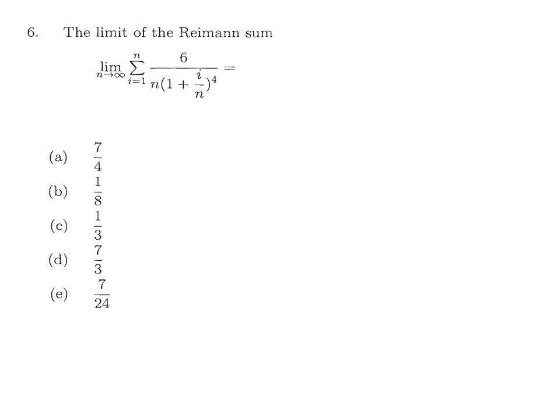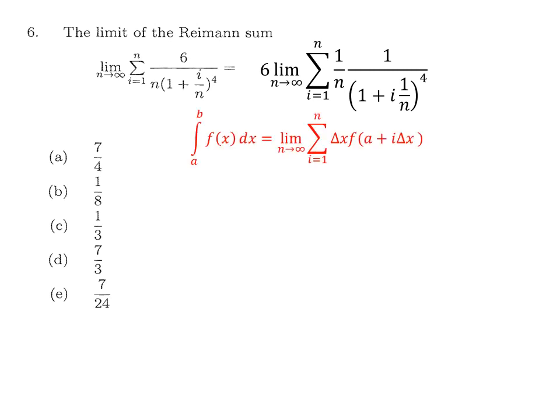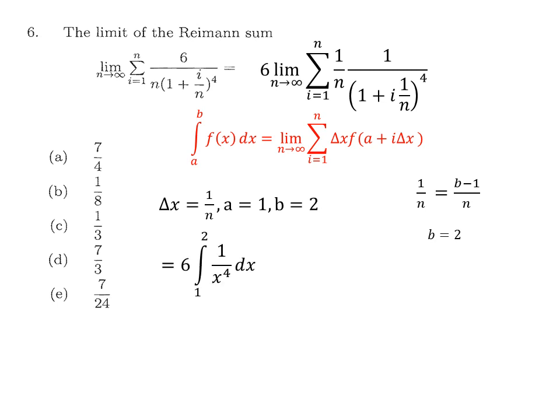For question 6, we evaluate the limit by converting it to a definite integral. Rearranging and comparing with the Riemann sum formula, delta x = 1/n, a = 1, and b = 2. So we evaluate the integral from 1 to 2, whose anti-derivative is x^(−3)/(−3). Plugging in the limits gives 7/4 as the final answer.